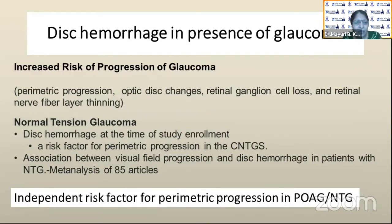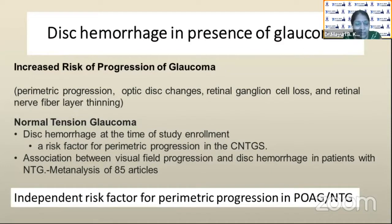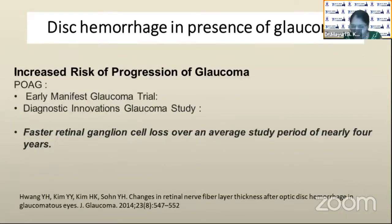In normal tension glaucoma patients, disc hemorrhage is a risk factor for perimetric progression as shown by the CNTGS trial. It is an independent risk factor for perimetric progression for both primary open-angle glaucoma and NTG cases. Other studies have also shown that there is faster retinal ganglion cell loss over an average study period of nearly four years.